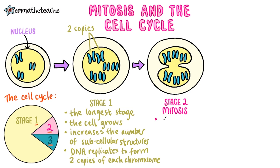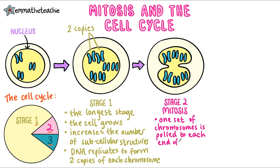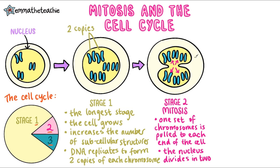Stage 2 is mitosis. In mitosis one set of chromosomes is pulled to each end of the cell. You can see this happening in the diagram above, with half of the chromosomes having gone to the top of the cell and half having gone to the bottom. The nucleus will also need to divide in two, splitting the chromosomes in half. You can see the nucleus starting to pinch in and it will completely split off.